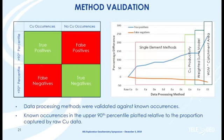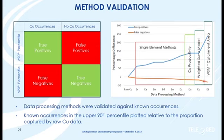We can test that by looking at the true positives — copper occurrences that occurred in the upper 90th percentile of a processing method. The base example was the raw copper. Looking at a variety of individual methods of processing the copper data, you can see we're increasing the number of true positives. Adding productivity — a correction for dilution — it goes up again. Going to a weighted sums model involving several elements is an improvement, and when we correct the weighted sums model for dilution, we get our best response: over 200% more true anomalies from the processed data than from the raw copper data.